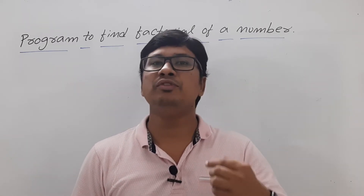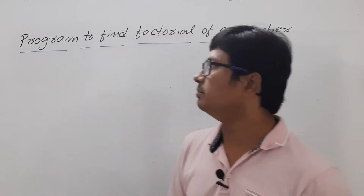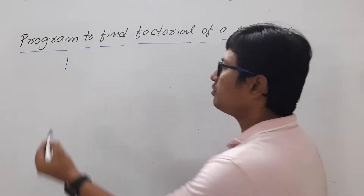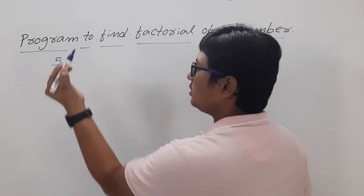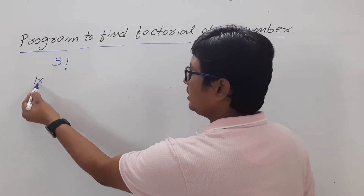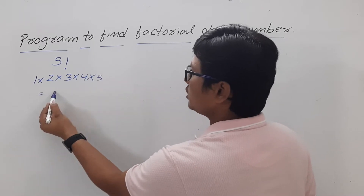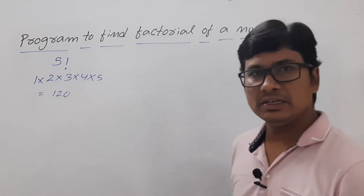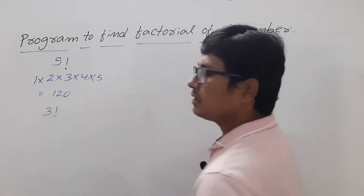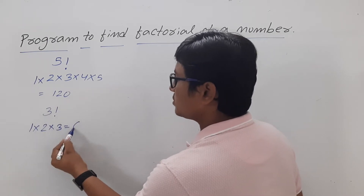First let me discuss how we can compute the factorial of a number. The factorial of a number will be represented like this. If you want to compute 5 factorial, it is 1 × 2 × 3 × 4 × 5, which is equal to 120. Similarly, 3 factorial is 1 × 2 × 3, which is equal to 6.